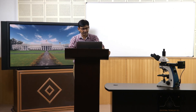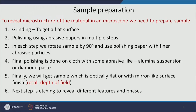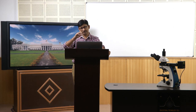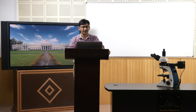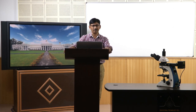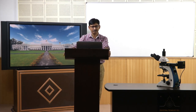The next step is etching to reveal different features and phases. Once I get this optically flat sample, I want to introduce some roughness or new features on the surface to start seeing the microstructure of the material. This is in a nutshell the whole process of sample preparation. Now we will look into detail at each of these steps.